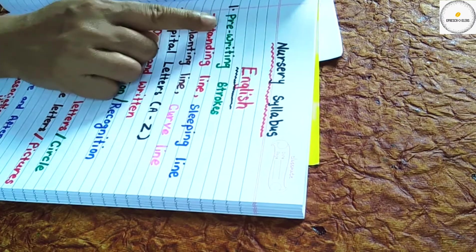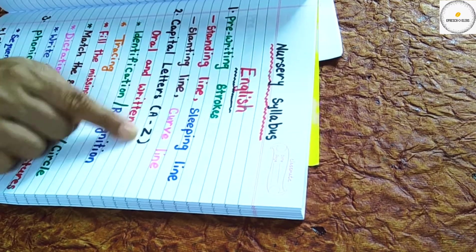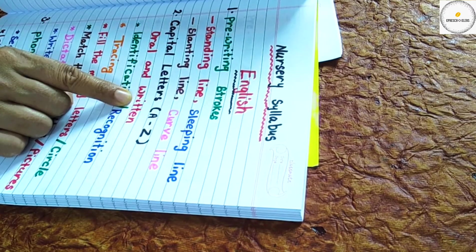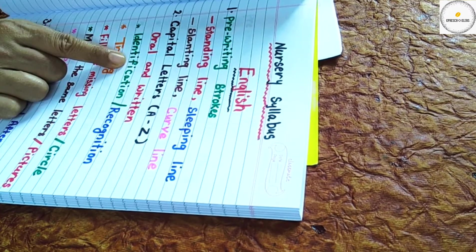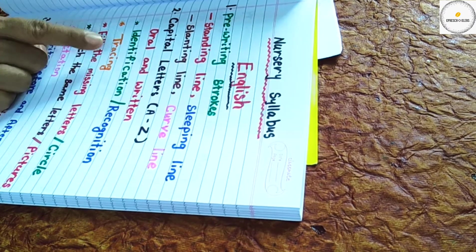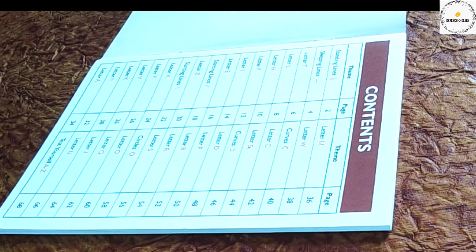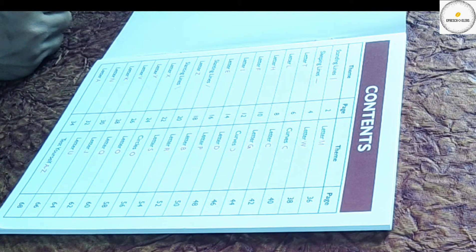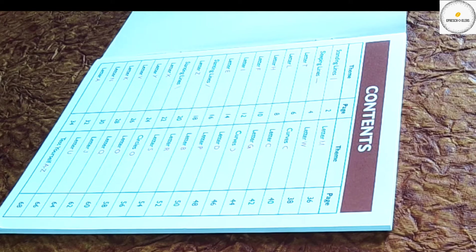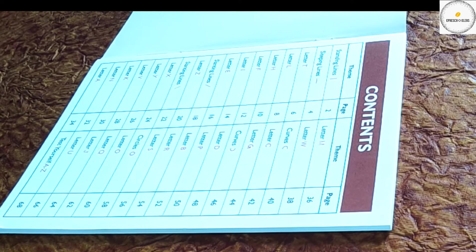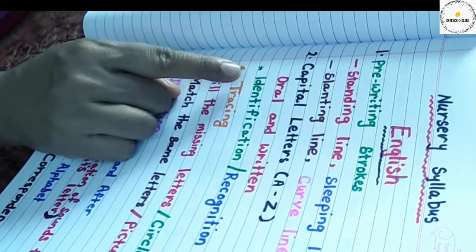After the child finishes pre-writing strokes, the child has to learn capital letters from A to J, both orally and in written form. The child has to identify and recognize all the letters, trace them, and say the letter name. It is preferable to have the child learn the easy letters first, then move to the difficult ones, starting from standing and sleeping line patterns before moving slowly to curved ones.